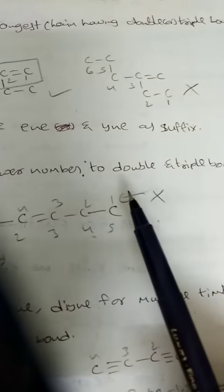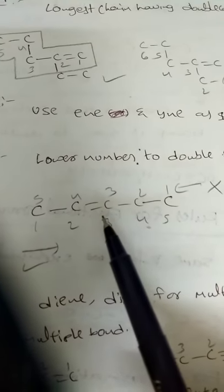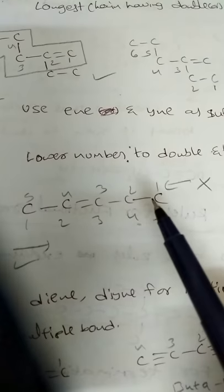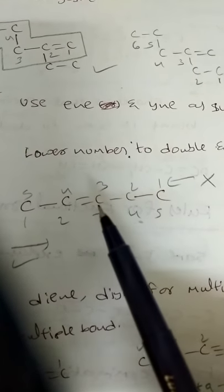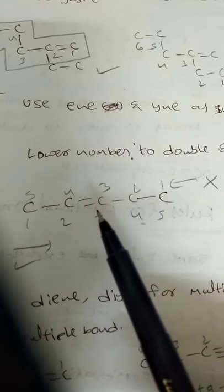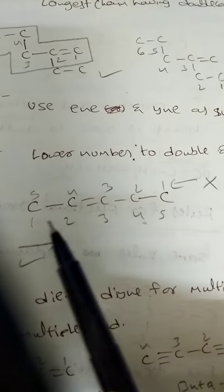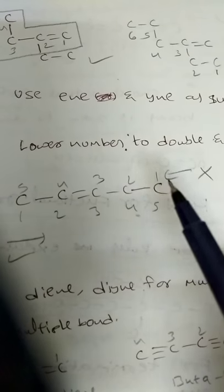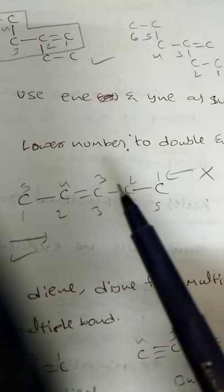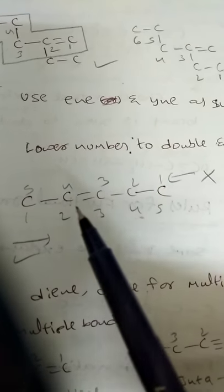Rule 3: give the lower number to the double bond and triple bond. Whenever a double bond or triple bond is in a chain, the numbering must assign the least number to that bond. So 1-2-3-4-5 is the correct numbering in the direction where the double bond gets the lowest locant. If in the other direction the double bond gets number 2, then that direction is correct since 2 is the least number.